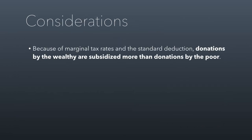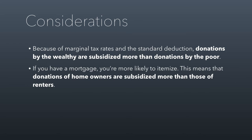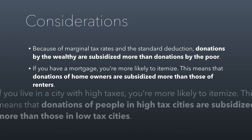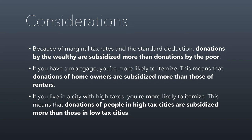There are other problems because of the way marginal tax rates and the standard deduction work. Donations by the wealthy are subsidized more than donations by the poor, but there's more: if you have a mortgage, you're more likely to itemize, and that means donations by homeowners are subsidized more often than donations by renters. Why should we care whether you're a homeowner or renter when it comes to giving? And yet the tax code effectively says it values giving by homeowners more than renters. Similarly, if you live in a city with high taxes, you're more likely to itemize, meaning donations of people in high-tax cities are subsidized more than those in low-tax cities — or put another way, donations of urban dwellers are subsidized more than those of rural people.